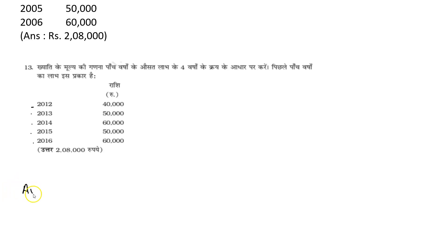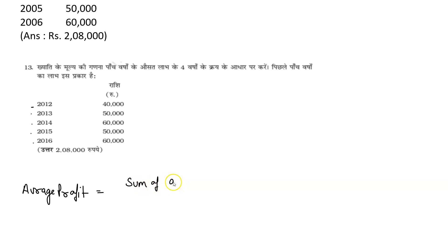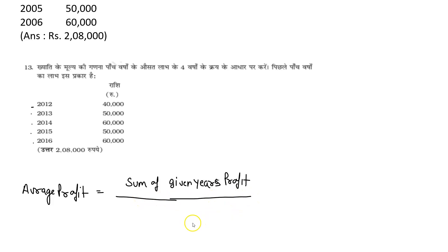Average profit. This type of question — don't leave them, because these are easy marks. It is very simple. Average profit is equal to: Sum of given years' profit, divided by number of given years.